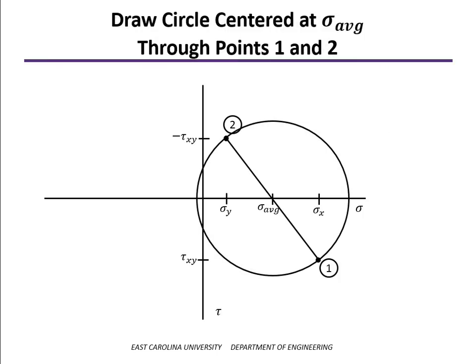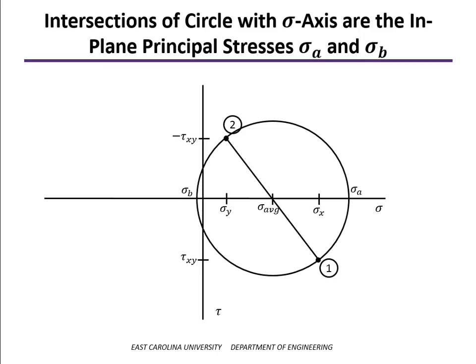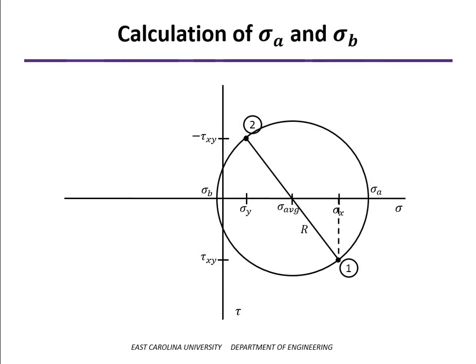From the circle, we can see that the maximum normal stress is designated sigma a — as far out on the normal axis as you can get. The minimum in-plane principal stress, which we'll call sigma b, is over on the left. Relative to sigma average, if we add the radius of the circle that takes us out to sigma a, and if we subtract the radius of the circle that gives us sigma b.